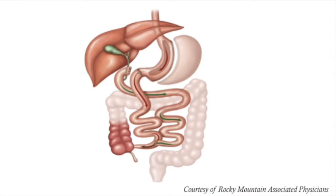The duodenal switch is a complex bariatric surgery which induces weight loss by combining a sleeve gastrectomy with an intestinal bypass. Following sleeve gastrectomy, the lower intestine is then divided further downstream than with a traditional gastric bypass. Thus approximately two-thirds of the intestine are bypassed, leaving only a few feet of intestine where food and digestive enzymes meet. The name duodenal switch comes from the fact that in this operation the intestinal bypass starts at the level of the duodenum, which is divided and subsequently attached to the ileum.